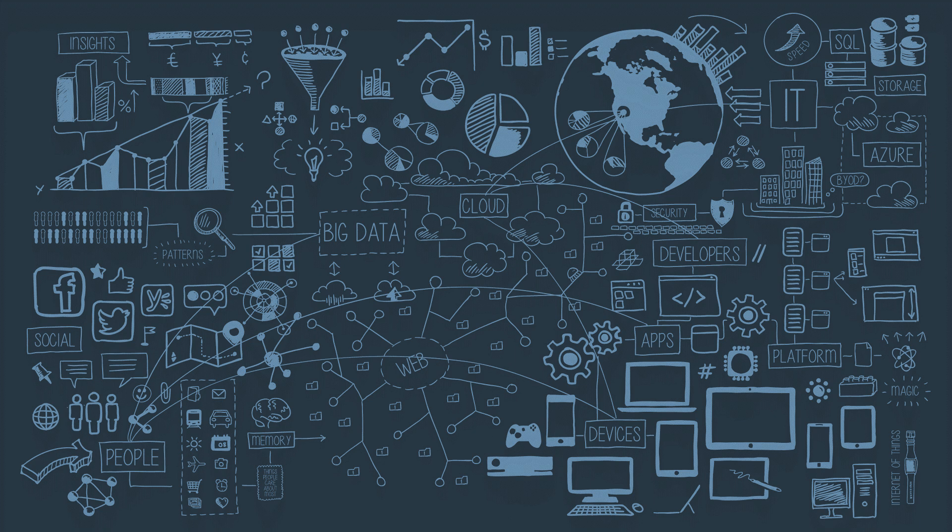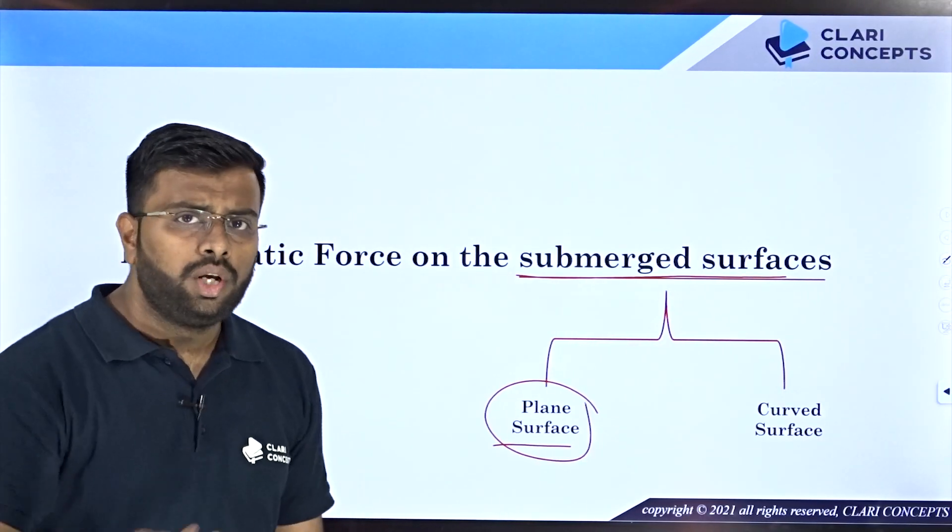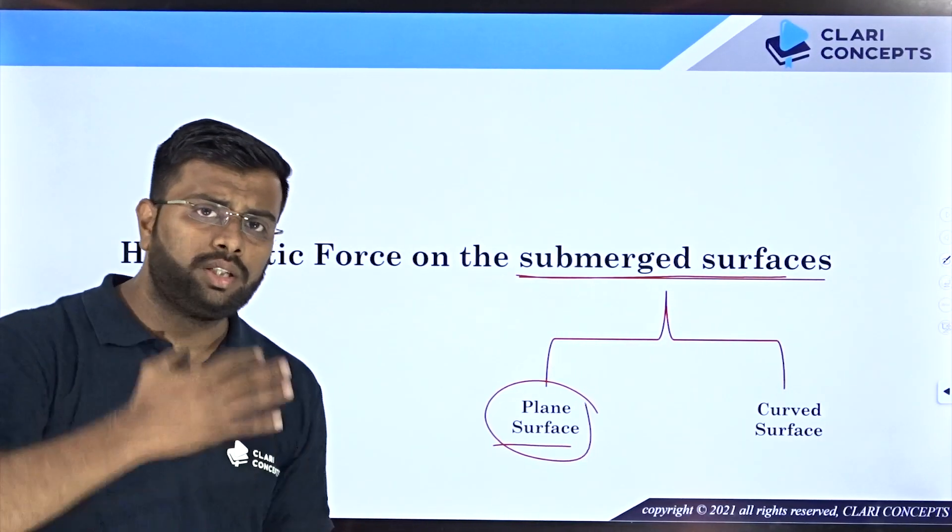Today we talk about hydrostatic forces on submerged surfaces. There are two types of submerged surfaces: plane surfaces, which are flat in nature, and curved surfaces. The examples we saw were a mixture — some were curved surfaces, some were flat. We will start our discussion with how to calculate hydrostatic force for a submerged plane surface.